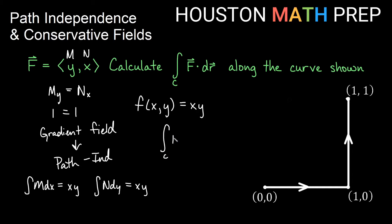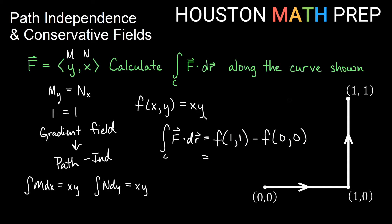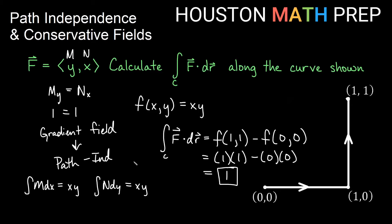If my potential function is xy and I end at (1,1) and start at (0,0), I just plug them into the potential function and subtract. So my integral over my path of F·dr is just my potential function with (1,1) plugged in minus the potential function with (0,0) plugged in. That gives me 1×1 minus 0×0, which is 1 minus 0, which is just 1. So much shorter than parameterizing the curve, finding bounds, integrating, and doing it again for the second piece.